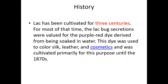A little history: the lac bug has been cultivated for three centuries. For most of that time, its secretions were valued for the purple-red dye extracted by soaking in water. In historical times there were no synthetic colors, so people extracted colors from natural sources, using the lac bug for purple dye. This dye was used to color silk, leather, and cosmetics, and was cultivated primarily for this purpose until 1870. Before 1870 it was only used for dyeing and cosmetics.